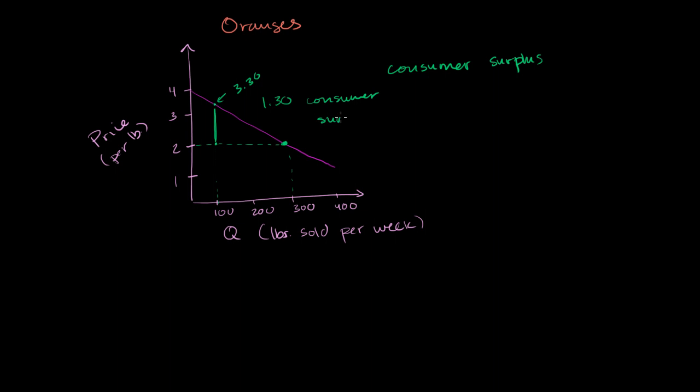So if you wanted to figure out the entire consumer surplus, well, you would just have to do it for all of the pounds. So that was the 100th pound. You could view this as the area of this little thing right over here. And let me zoom in just to make sure you understand what's going on.